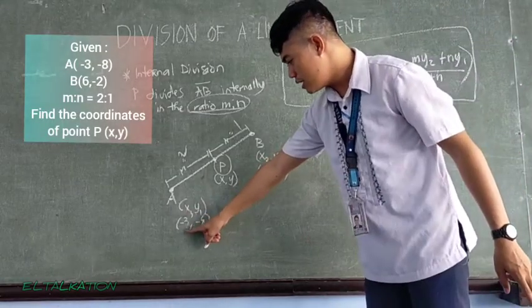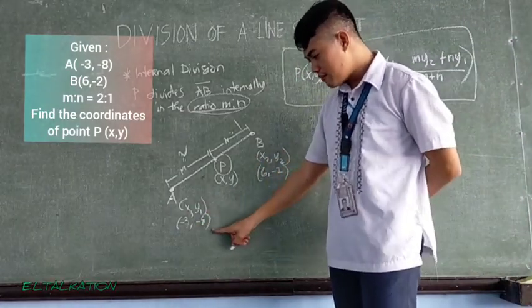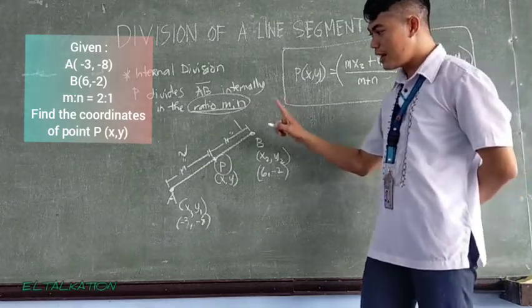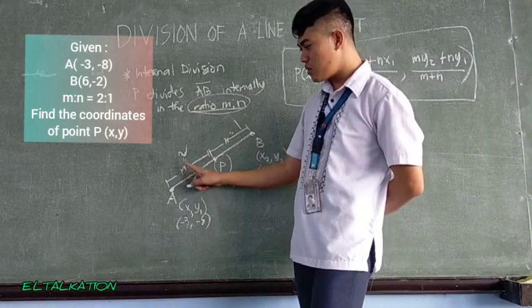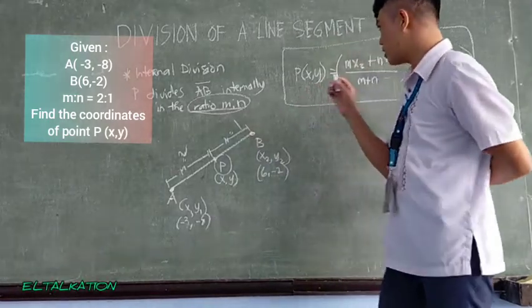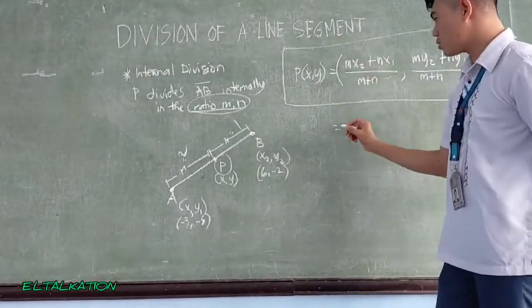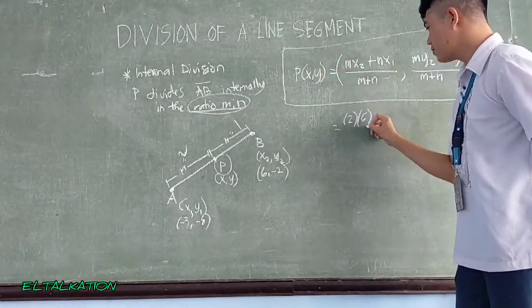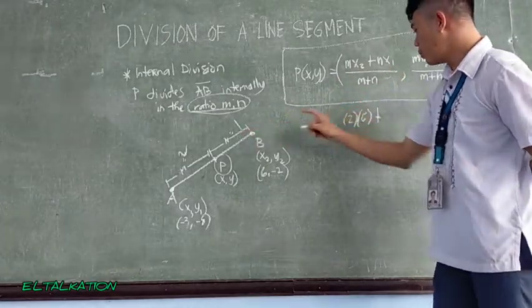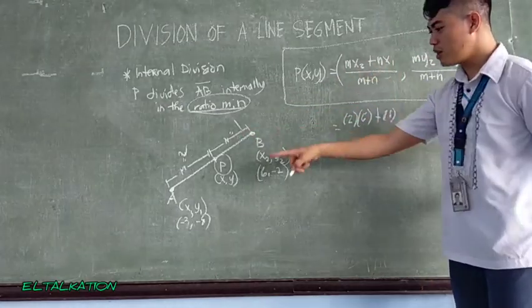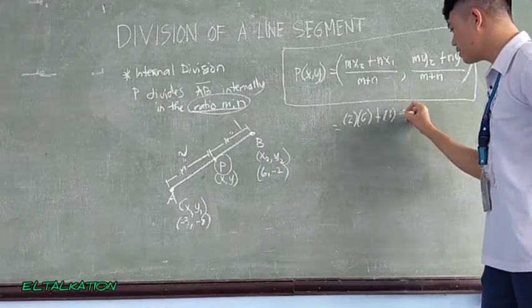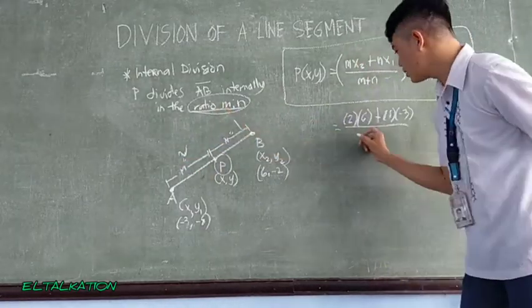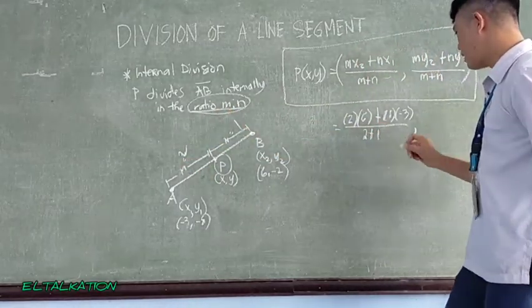Let's have this one as x of 1 negative 3, y of 1 negative 8, x of 2 is 6, y of 2 is negative 2. While M, which is the ratio, is 2 and N is positive 1. So to substitute the values, M is 2 multiplying to x of 2 which is 6, plus N which is 1 times x of 1 which is negative 3, all over M plus N which is 2 plus 1.